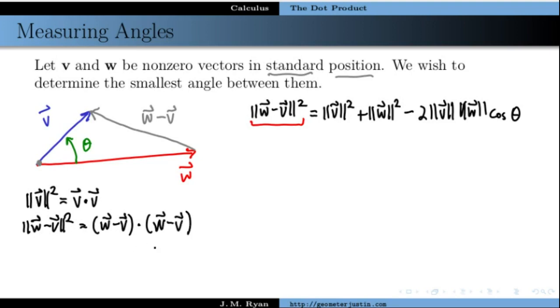And so this becomes w dotted with w minus v dot w minus w dot v plus v dot v.